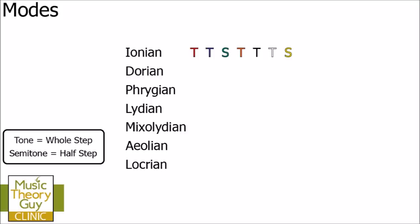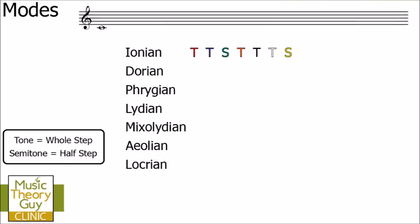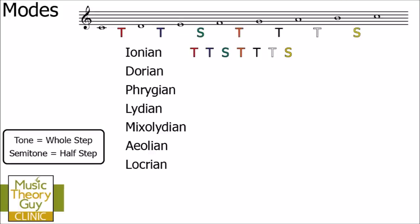Ionian is made up of tone, tone, semitone, tone, tone, tone, semitone. Let's look at Ionian on C — a mode that starts and ends on C. Starting on C in the treble clef, we go up a tone to D, then a tone to E, then a semitone to F, and so on until we reach the top. That gives us our completed Ionian on C.